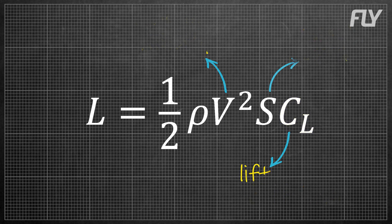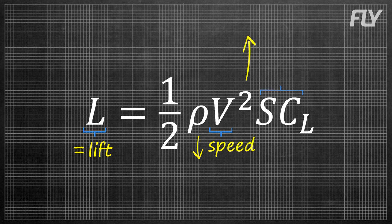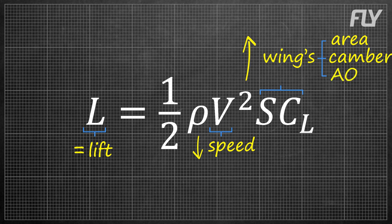Here it can be seen that if we want a plane to produce the same amount of lift but with lower speed, we need to increase either the area of the wing, or its camber, or its angle of attack. This is when flaps come in handy.